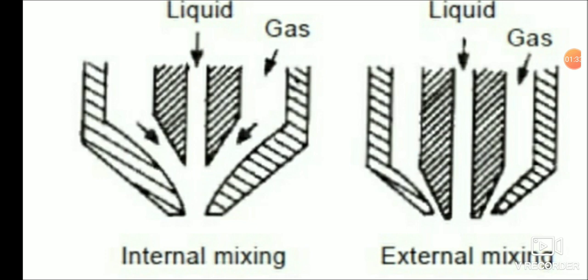This type of mixing is used exclusively for the atomization of metals. Internal mixing is quite common for the atomization of materials which are liquid at room temperature. The axis of the gas jets are usually equally inclined to the melt stream axis and intersect this axis at the geometrical impingement point.